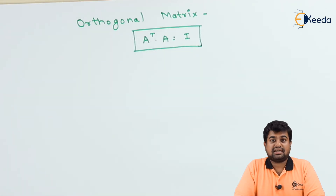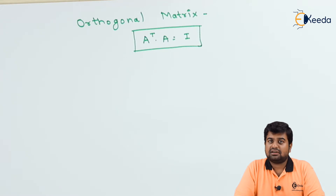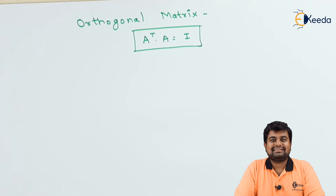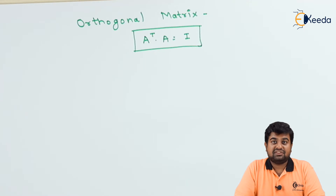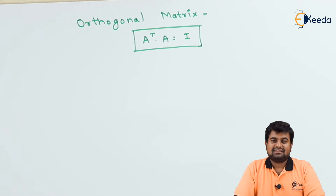Now to understand what an orthogonal matrix is: any matrix A, when multiplied by its direct transpose — here we are not talking about any conjugate — just the pure transpose, A into A-transpose equals I, the identity matrix. If this condition is satisfied, then we call matrix A an orthogonal matrix.